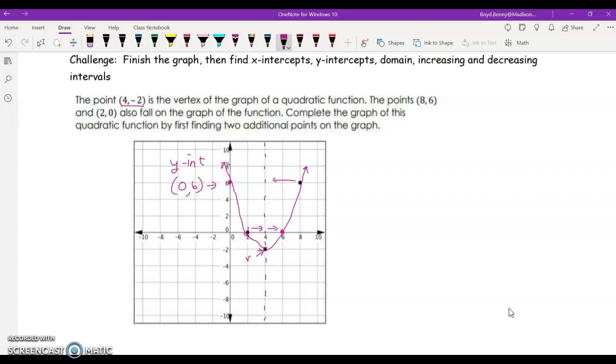Our x-intercepts are right here and right here. So, that's the point 2 comma 0 and 6 comma 0. So, the solutions would be 2 and 6, if we had the equation and could factor it or use the quadratic formula.